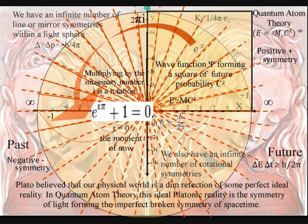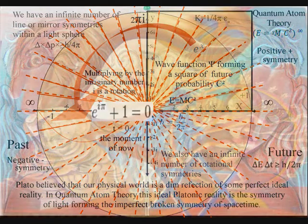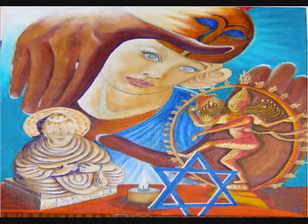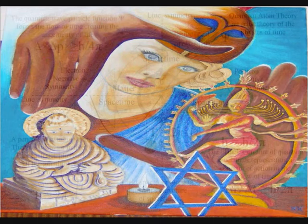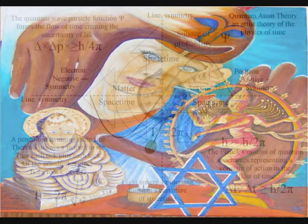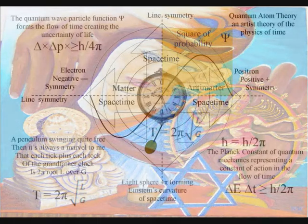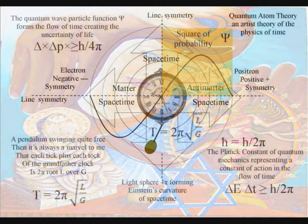This theory is quite easy to understand because, like the mathematics of ancient Greece, the mathematics represents geometry. The only difference is that it is an interactive dynamic geometry that is continuously coming into existence.